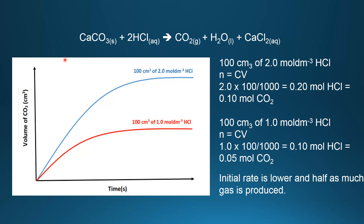For the next graph, the blue curve is 100 cm³ of 2 mol/dm³ hydrochloric acid, and the red curve is 100 cm³ of 1 mol/dm³ hydrochloric acid. As you can see, the initial rate for the blue curve is higher than for the red curve. The reason is the concentration of the acid: 2 mol/dm³ versus 1 mol/dm³, so the initial rate is faster for the blue curve.